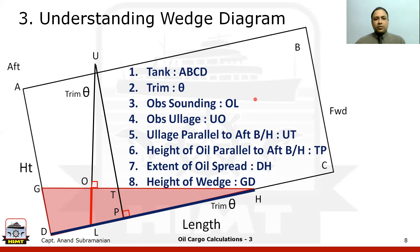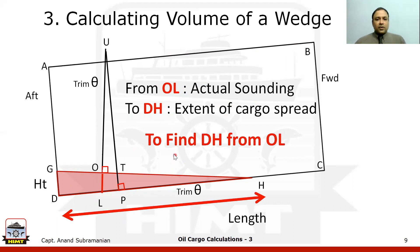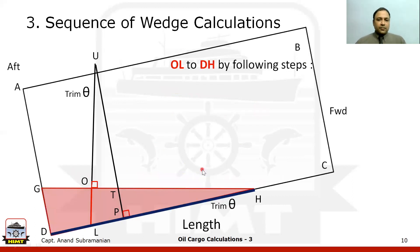The procedure for calculating the volume of a wedge: what is given to us is OL — the actual sounding of the oil. From OL, we have to figure out what is DH — the extent of the cargo spread. DH is our first stop to figure out whether it is a wedge or not. The whole story of finding out from OL to DH is what we call the wedge calculation.